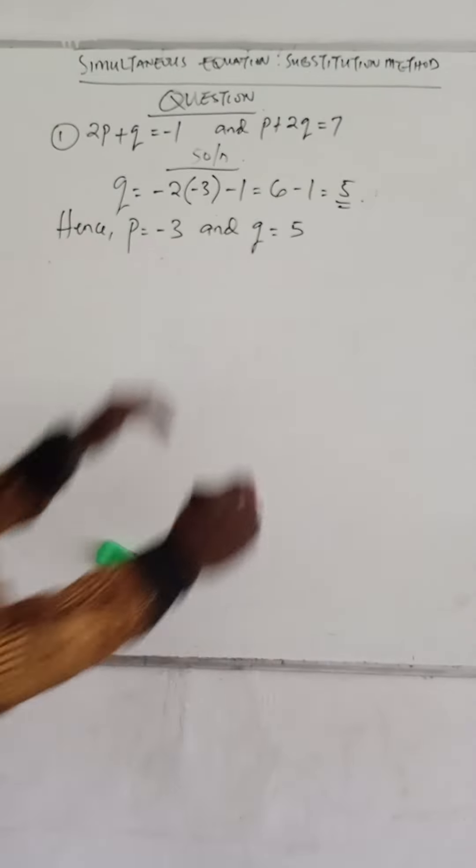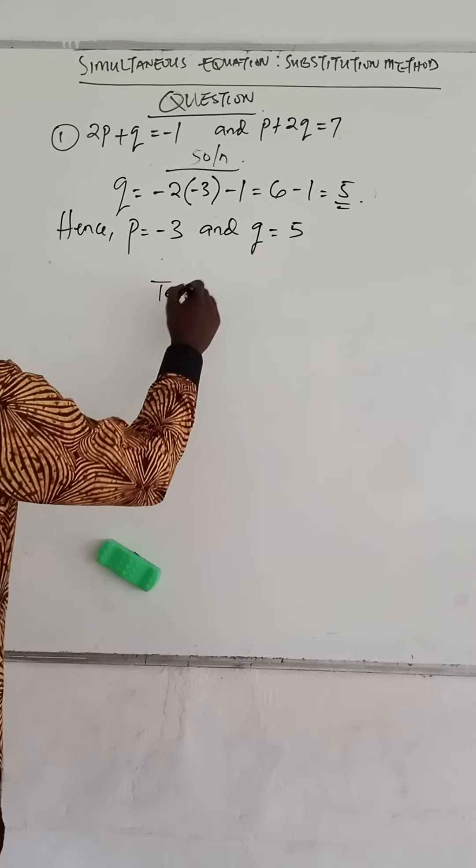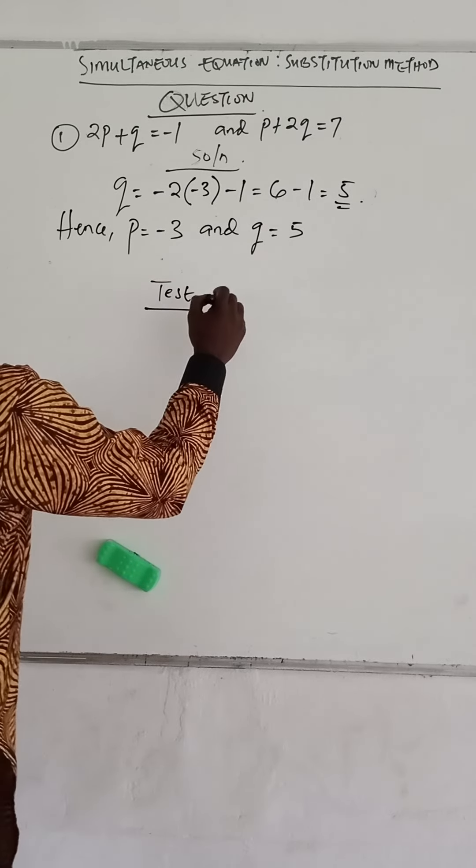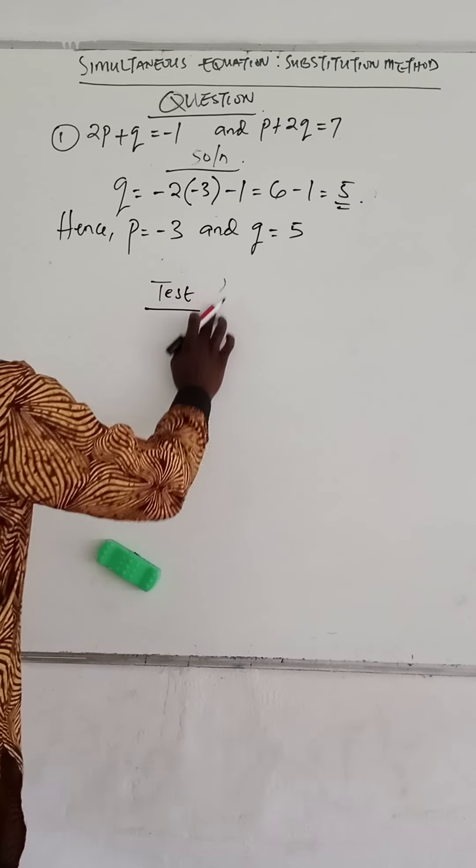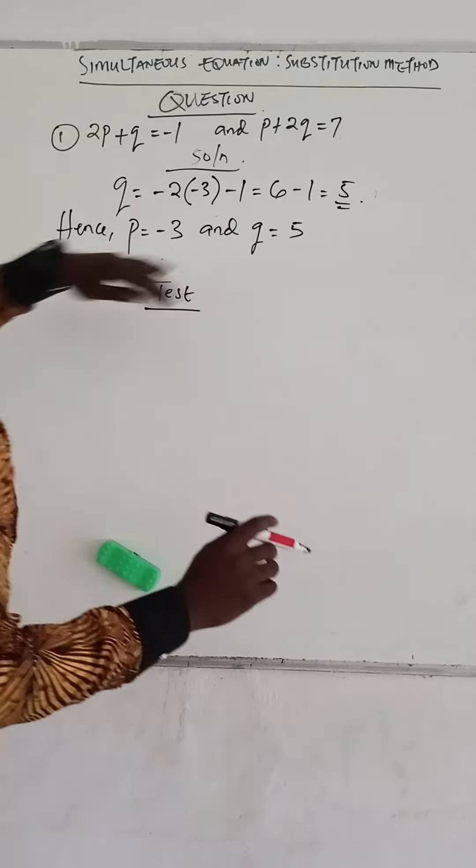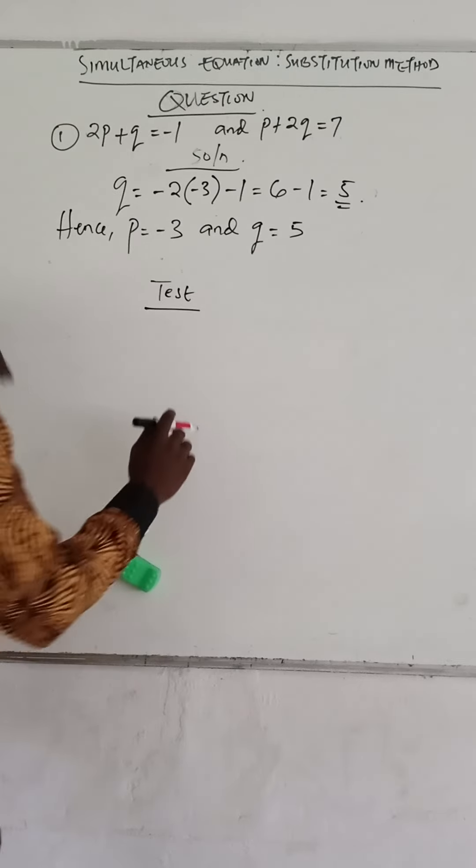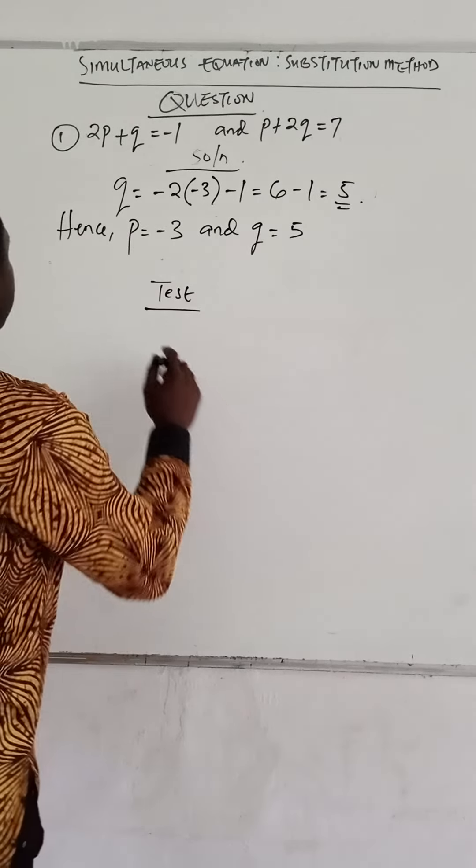So if we substitute these values to test for correctness, we can substitute the p value and the q value.